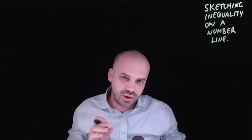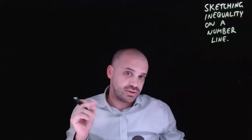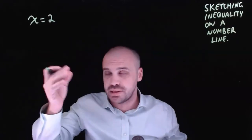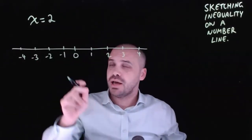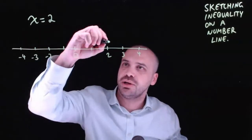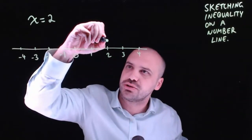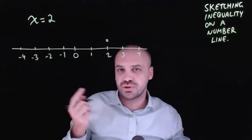So we're sketching inequalities on a number line, but first we're going to sketch equalities on a number line. x equals 2 is an equality, they're equal to each other. This is a number line, and to sketch the equality x equals 2 on the number line, I just draw a dot where x equals 2 is.